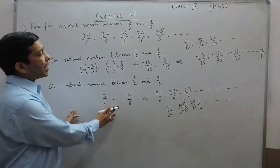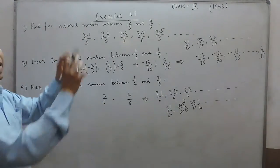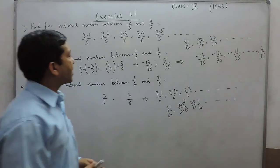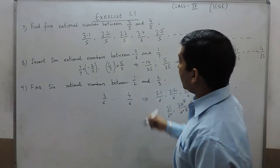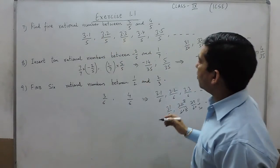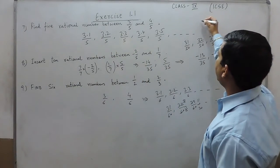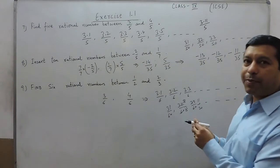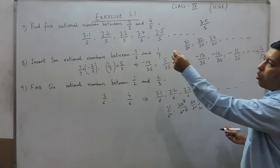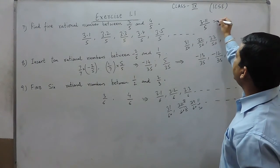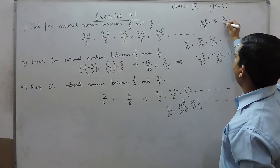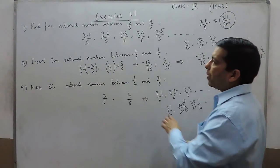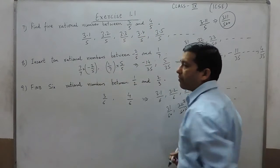So in this exercise, we have learnt that between two rational numbers there are an infinite number of rational numbers possible. Because if I can write 3.1/5, I can also write 3.11/5, since 3.11 is also between 3 and 4, and this can be written as 311/500. This is also a rational number between 3/5 and 4/5.